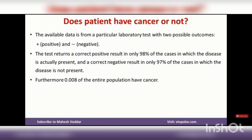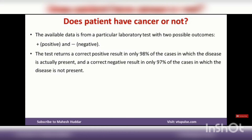Does the patient have cancer or not? How to detect? The available data is for a particular laboratory test with two possible outcomes: positive and negative. The test returns a correct positive result in only 98% of the cases in which the disease is actually present, and a correct negative result in only 97% of cases in which the disease is not present. The outcome with more numerical probability will indicate the result.